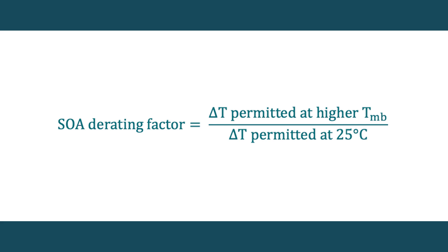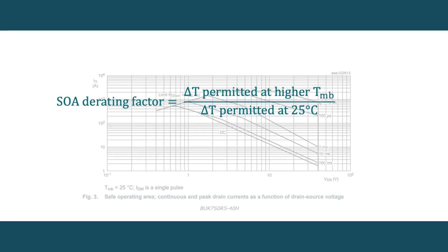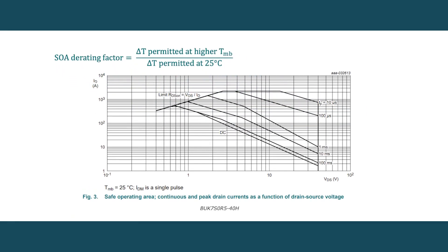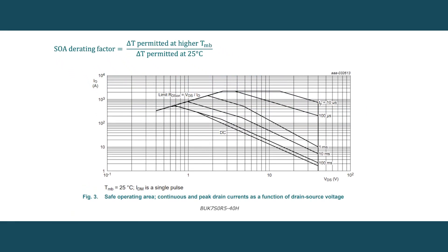Let's say in this particular application this MOSFET has an initial temperature of 100 degrees C. If we divide the permitted temperature increase at 100 degrees by the permitted temperature increase at 25 degrees, we will get our current derating factor — in this case, 0.5.